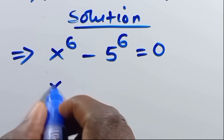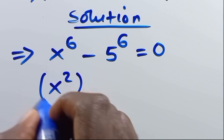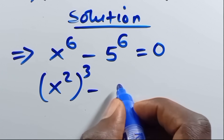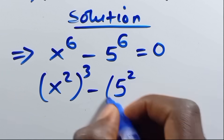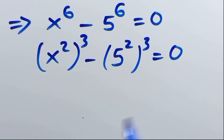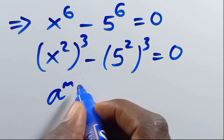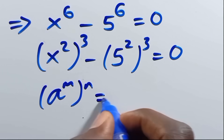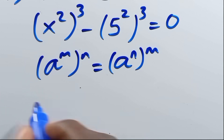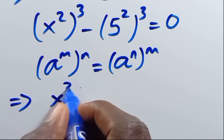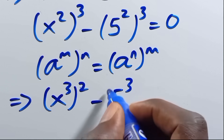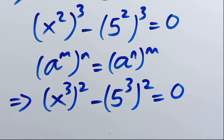So from here, we can write x to the power of 2, to the power of 3 — since 2 times 3 gives us 6 — minus 5 to the power of 2, to the power of 3, which also gives us 6, equals 0. Then, recalling that a to the power of m to the power of n equals a to the power of mn, we can rewrite this as x to the power of 3, in parentheses, to the power of 2, minus 5 to the power of 3, in parentheses, to the power of 2, equals 0.